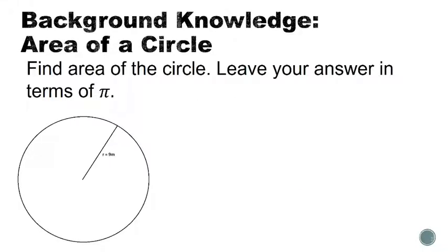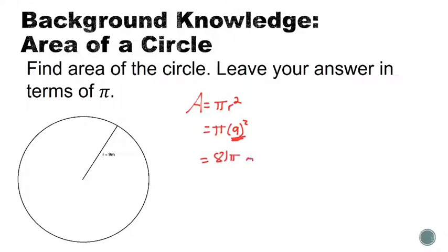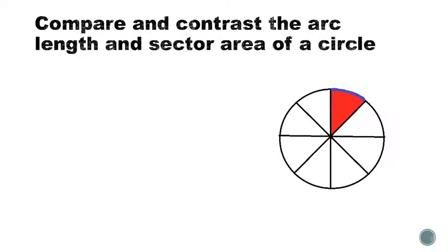Just to check our background knowledge — finding the area of a circle and leaving our answer in terms of pi. We know the area of a circle is pi r squared. In this case our radius is 9 meters, so our area is pi times 9 squared. 9 squared is 81, so the area is 81 pi. You can leave it in terms of pi or punch it into a calculator for a decimal approximation.